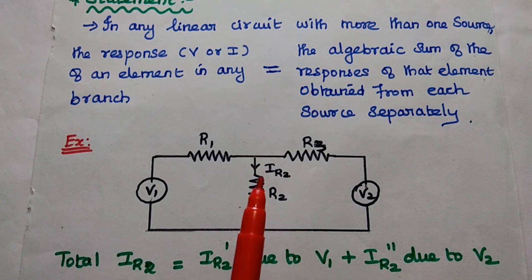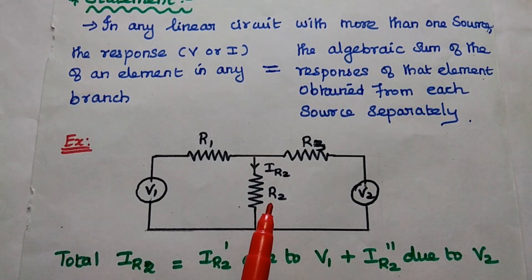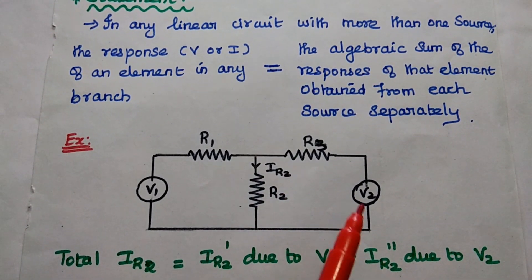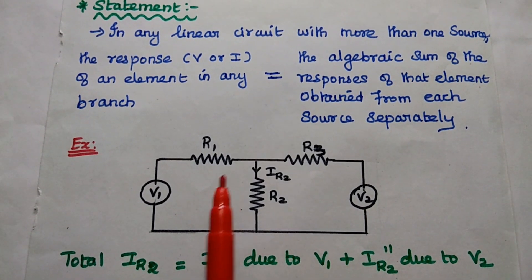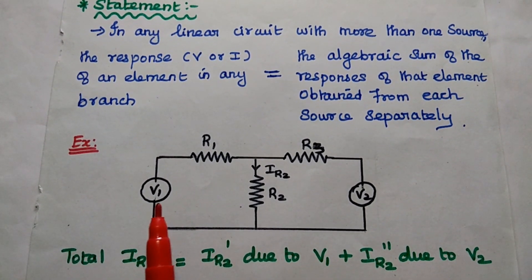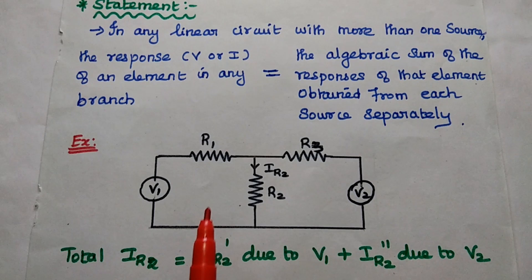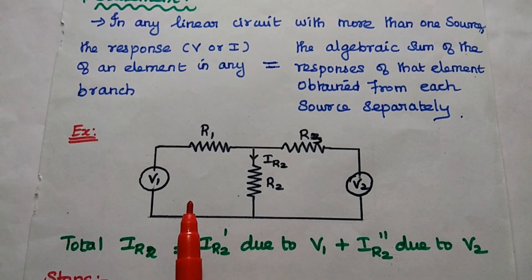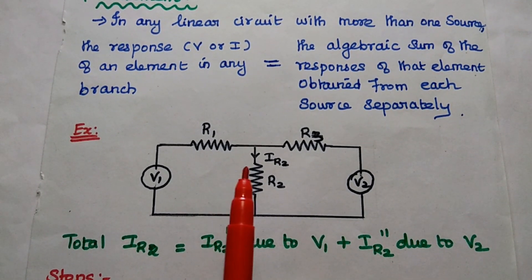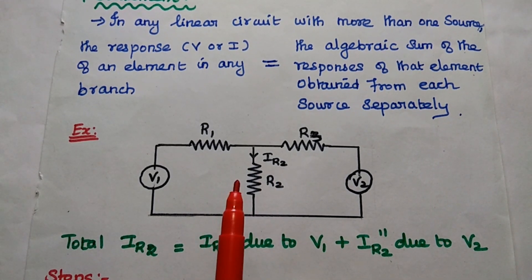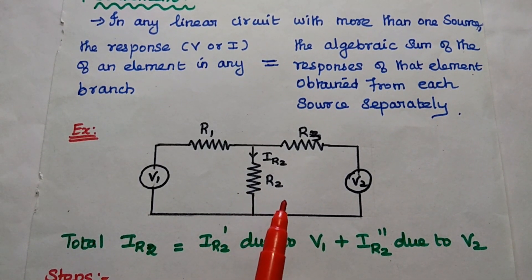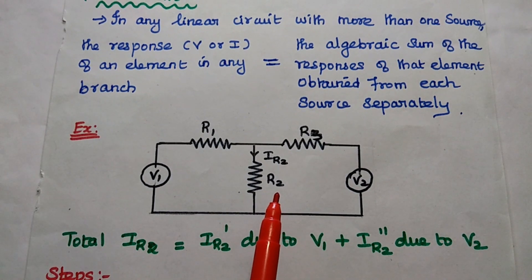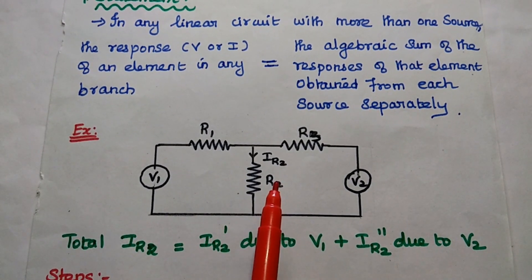So next we are going to find out the current through this R2 resistor due to this V2 voltage source. At the time, V1 voltage source is short-circuited. Finally, we can add these two current values to get the overall current flowing through this R2 resistor. So that is the concept of superposition theorem.